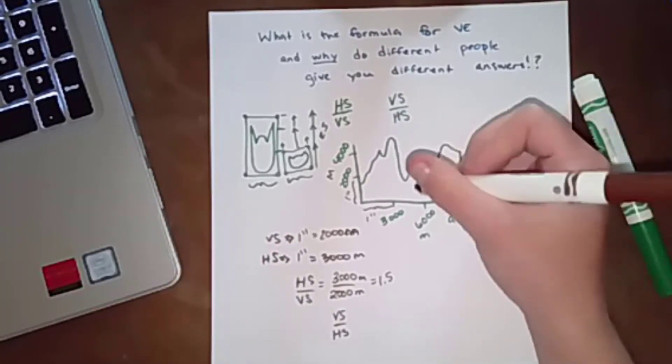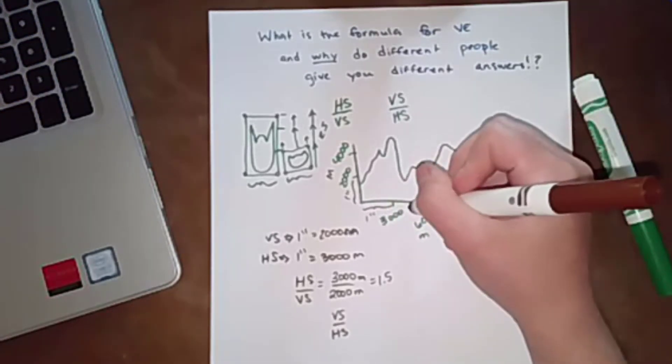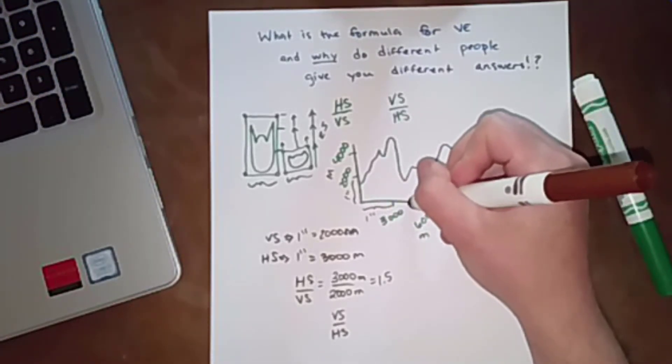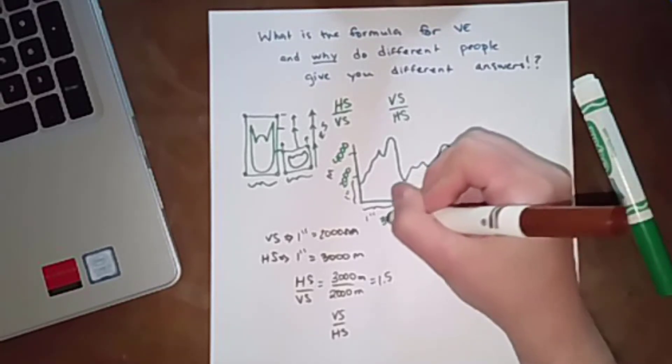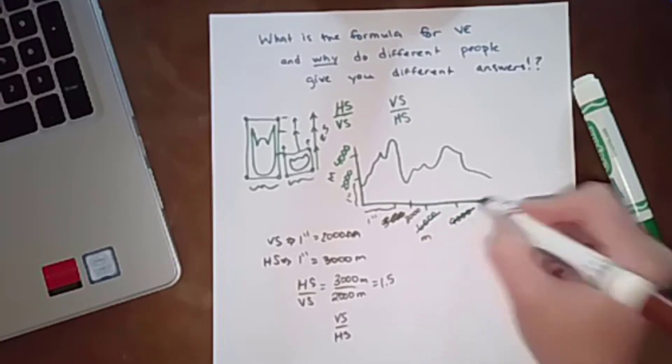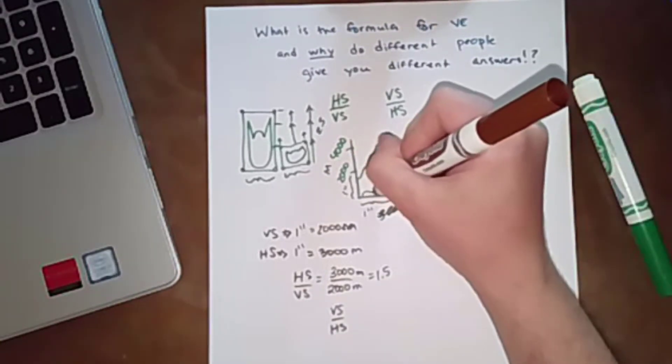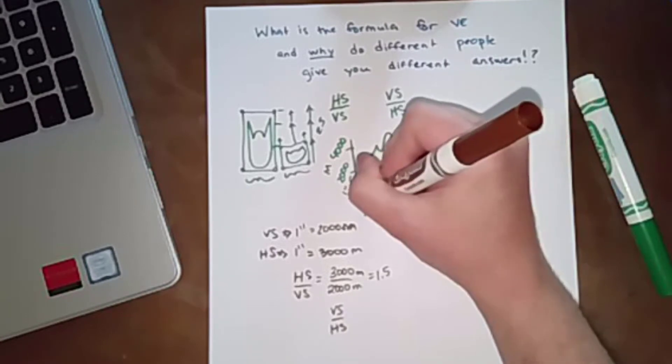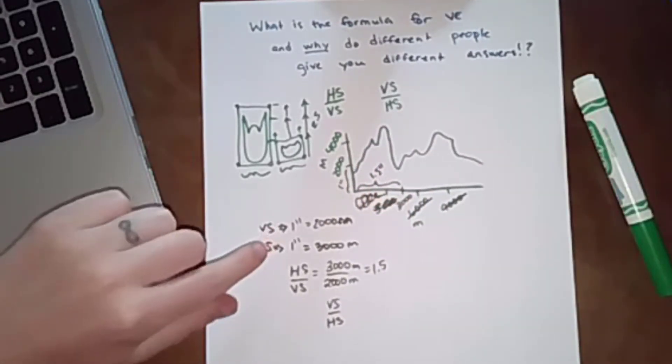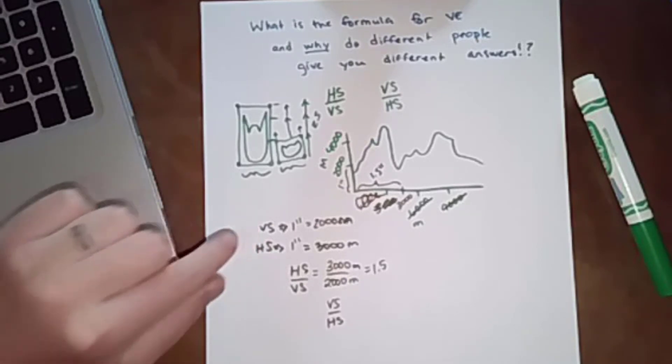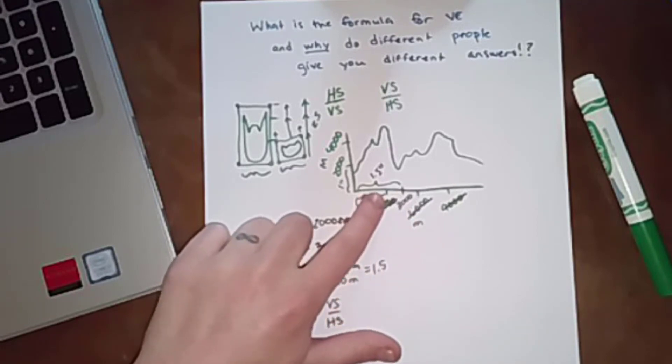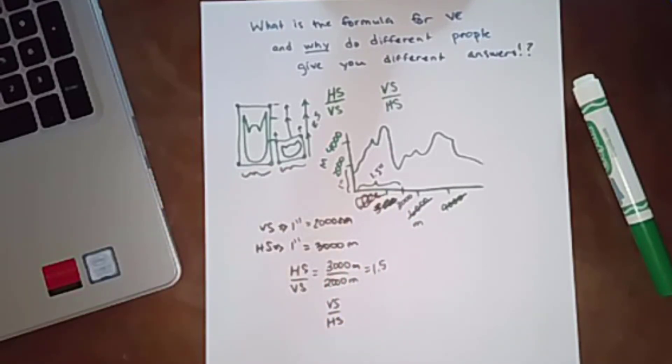So let's say that up here, instead of 1 inch being 3,000 meters, it had been 3,000 meters is 1.5. Now for us to use this method, this horizontal scale divided by vertical scale, we would have to convert this, figure out what 1 inch actually is, which that actually would give us no vertical exaggeration because that would be 1 inch is 2,000 meters. Well, we can carry through with it anyway.